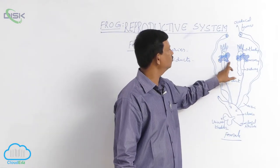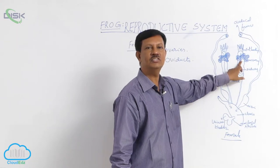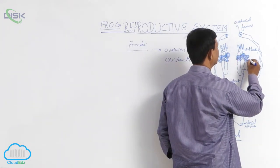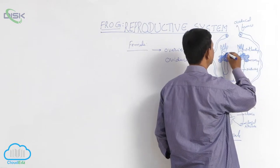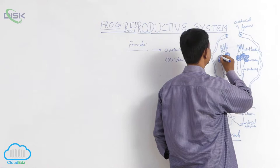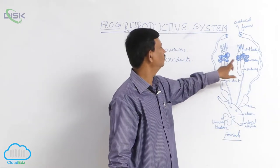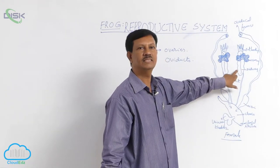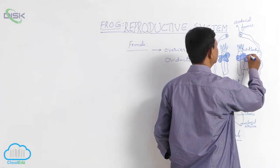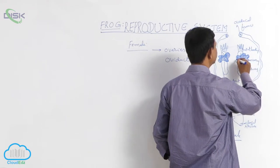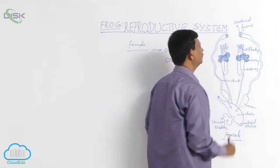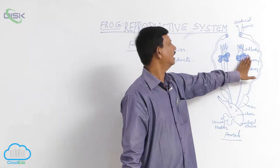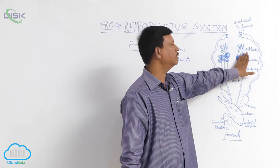One pair of ovaries are present at the anterior region of the kidneys. Here you can see these are the grape-like structures, with so many finger-like projections, and they are filled with eggs. Each ovary is covered by two peritoneal membranes and is attached to the peritoneum of the kidney, so it cannot move from one place to another — it is found in one fixed place.